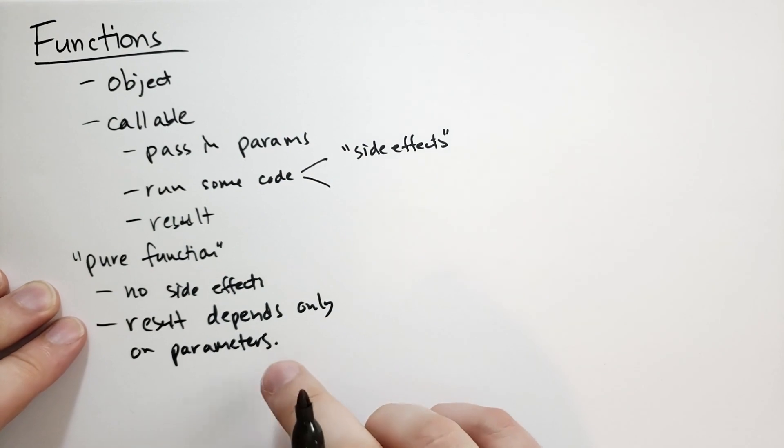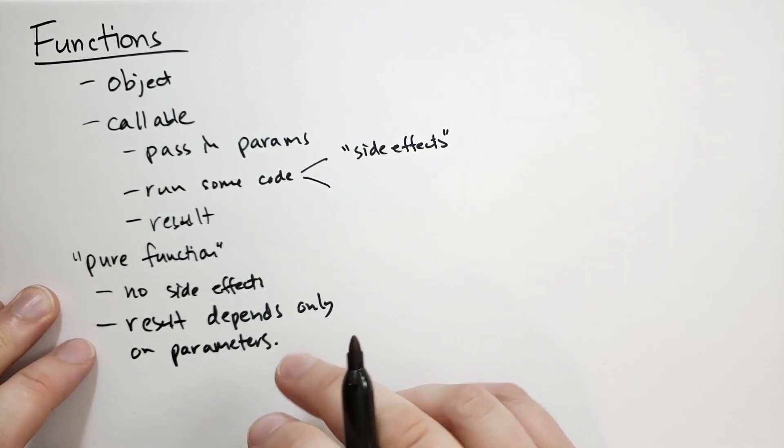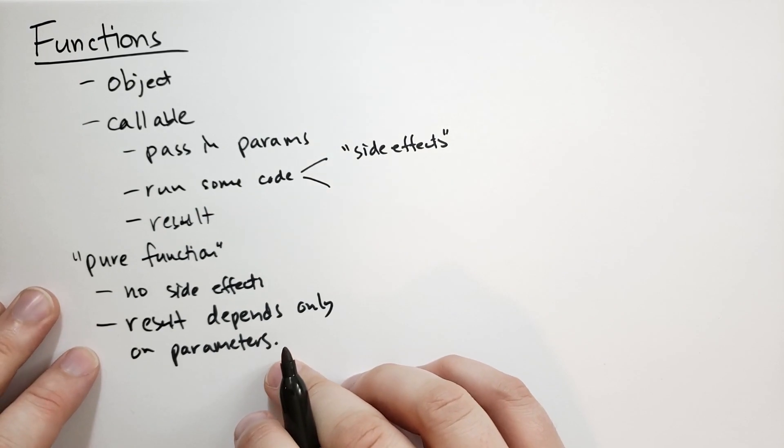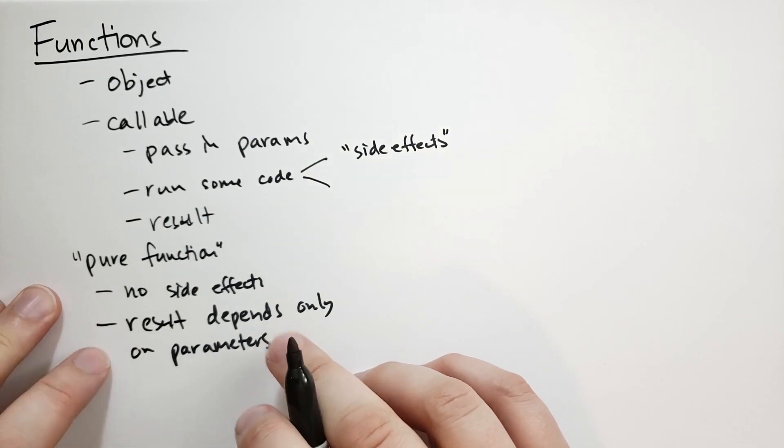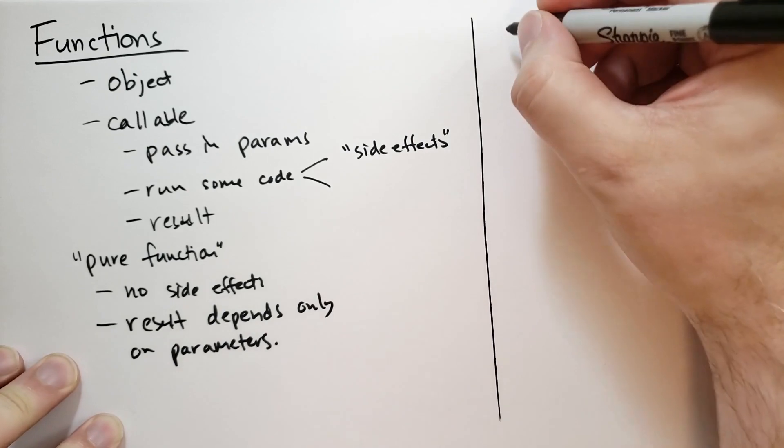Even though Python functions aren't necessarily pure functions, you can write pure functions in Python. And when you can, and I encourage you to find excuses to do so, you should use pure functions. It makes your life as a programmer so much easier. It makes the code so much more portable. So many good things happen because of using pure functions. So how do we use functions?